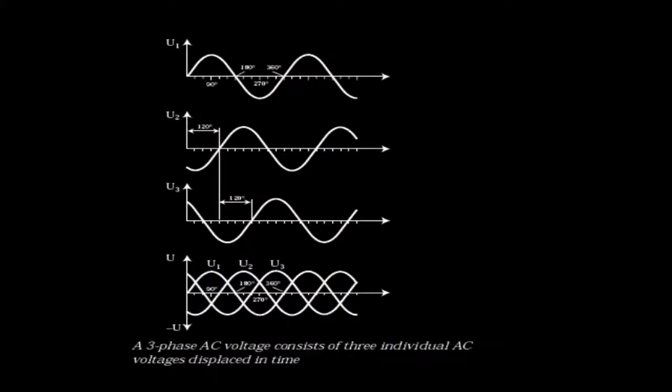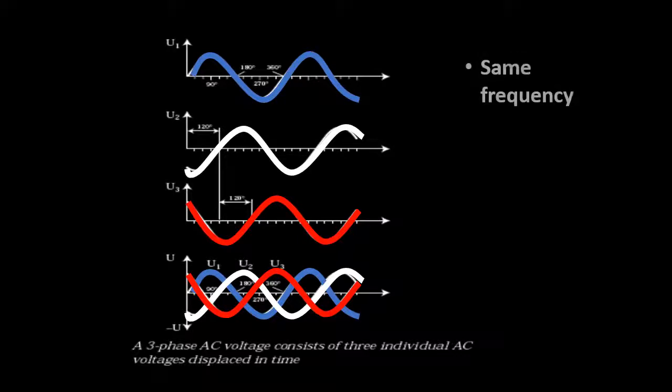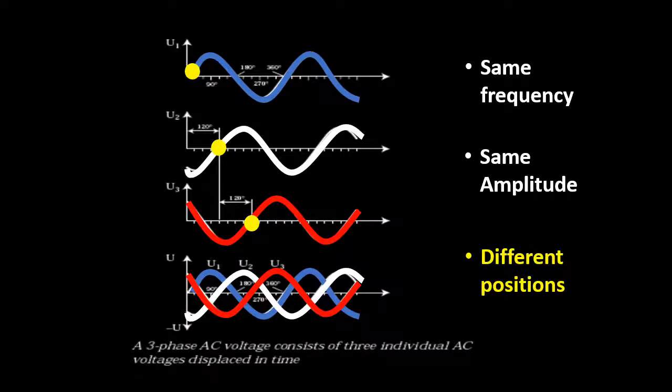In most applications, a VSD will drive a three-phase motor. Let's revise some basic three-phase theory. A three-phase feed consists of three separate circuits. Each circuit carries a sinusoidal AC voltage oscillating at a common frequency and amplitude. The difference between each circuit is in the placement of their oscillation, or phase. Each of the three circuits is a third of a revolution, or 120 degrees, shifted from the next phase.